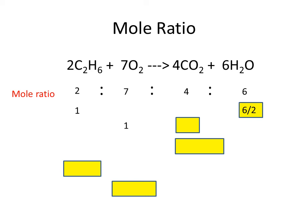What about if we had 1 mole of oxygen? To work out our mole ratio again, this time we're trying to find carbon dioxide. So we look at the coefficient of what we want and divide it by the coefficient of what we've got — so we'd have 4 divided by 7. If we had a smaller amount of oxygen, in this case 0.65 moles, we'd just take our mole ratio, which we already know is 4 divided by 7, and multiply that by 0.65 to calculate how many moles of carbon dioxide we'd get.